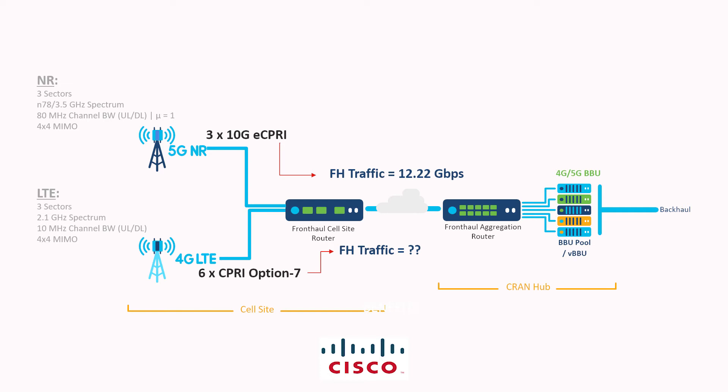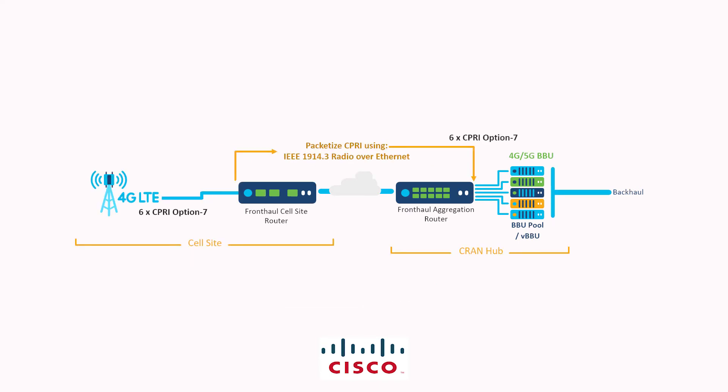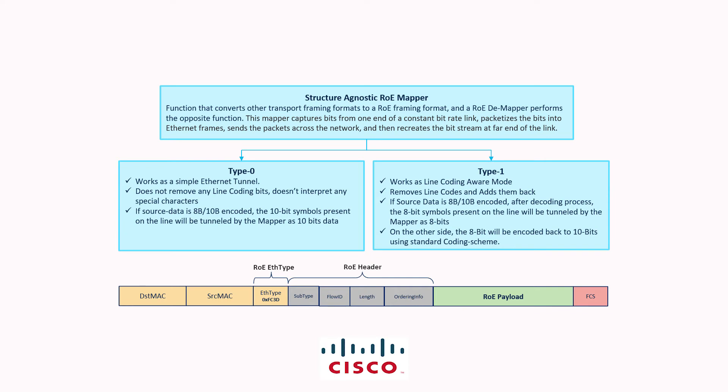But what about LTE? That is still not Ethernet or packet traffic. The six CPRI radio links that we calculated earlier are essentially constant bit streams, so we still need to packetize that to be able to carry it over a packet network. IEEE 1914.3, or Radio over Ethernet technology, is used to packetize CPRI bit streams. ROE provides mapping and tunneling technologies — namely structure-agnostic, structure-aware, and native mappers — to be able to packetize constant bit rate radio traffic at the cell site.